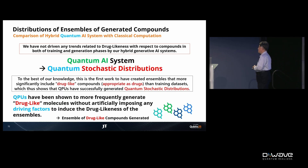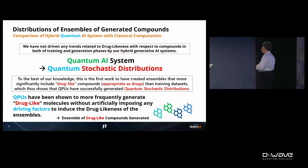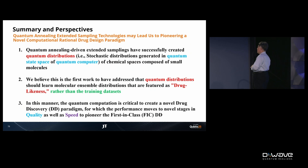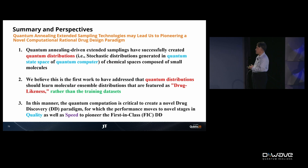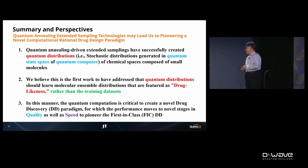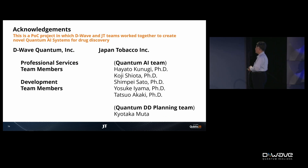To the best of our knowledge, this is the first work to have created molecular ensembles that more significantly facilitate drug-like compounds — more drug-like than the training data sets. In this manner, quantum computation could be critical to creating a novel drug discovery paradigm, advancing performance in quality and speed to pioneer first-in-class drug discovery.